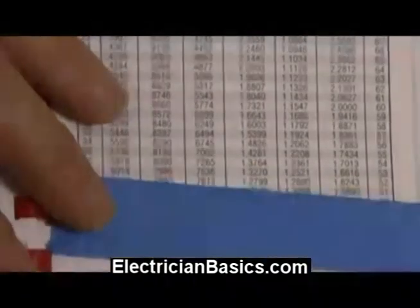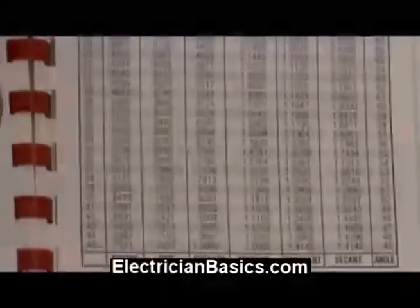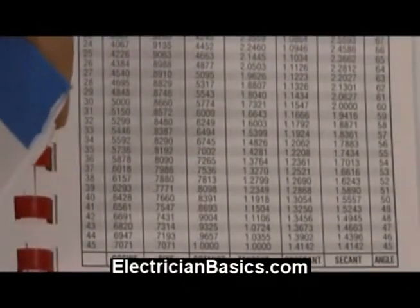So we know that 37 degrees was the number of degrees in that angle of that 345 right triangle.